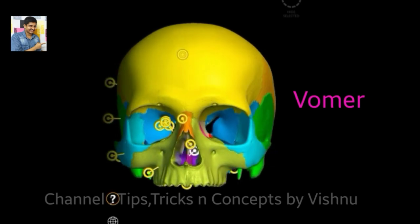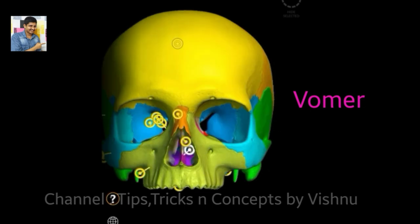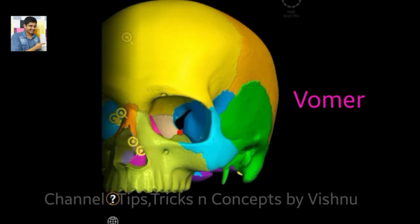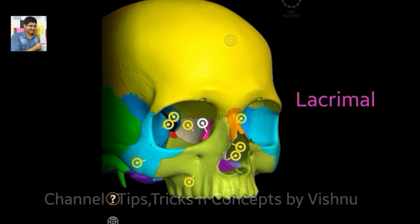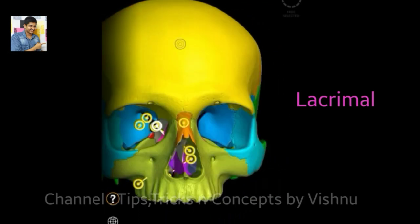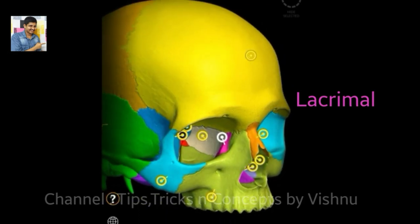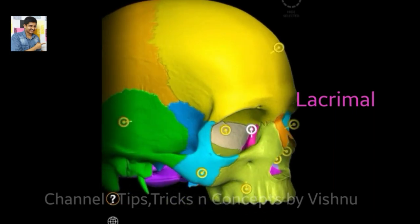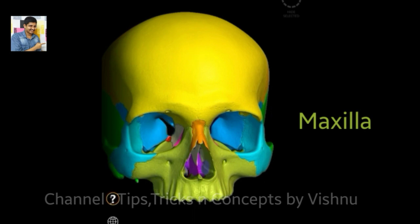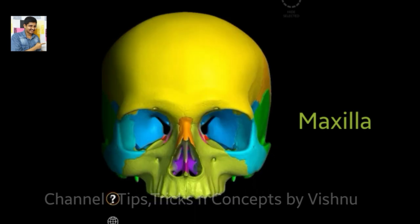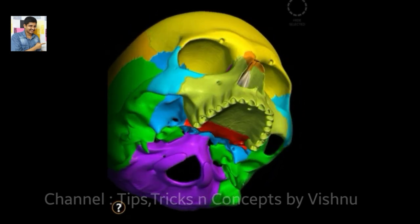The vomer is actually the two faces of a single bone, forming a part of the nasal septum. Next, the lacrimal bone is also paired. You can see the rose or magenta-colored lacrimal bone — two in number.